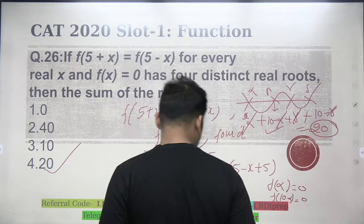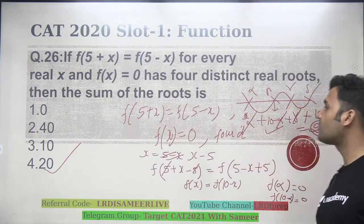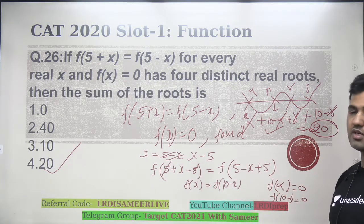That's it. Answer is question number 4. That's the answer to the question. So, with this, we are done with all questions. 26 questions of CAT 2020 slot 1.